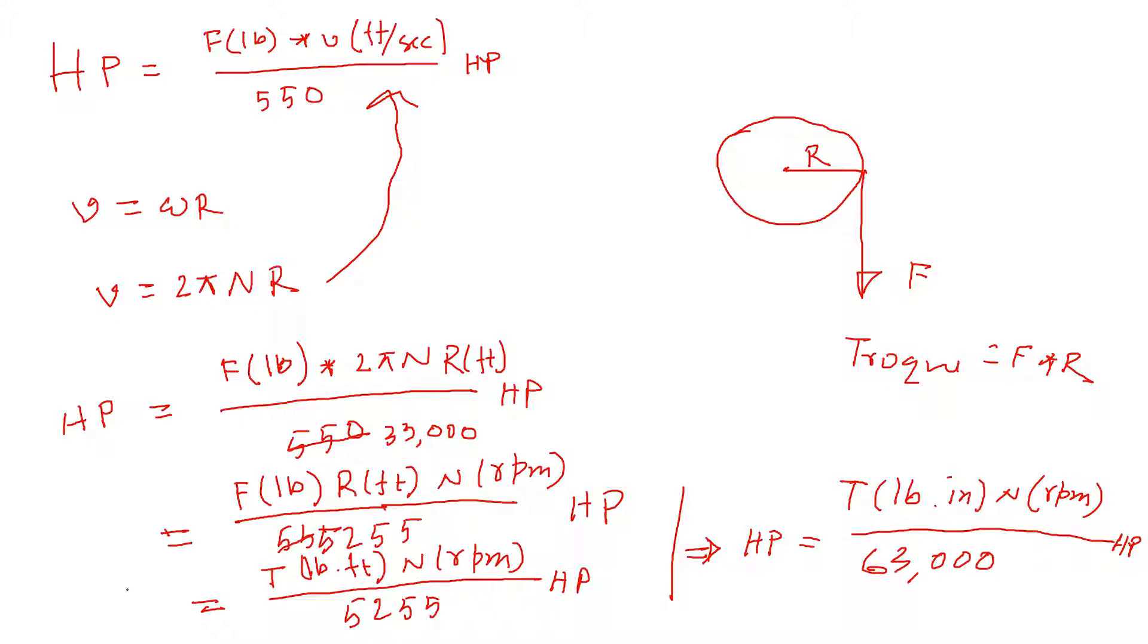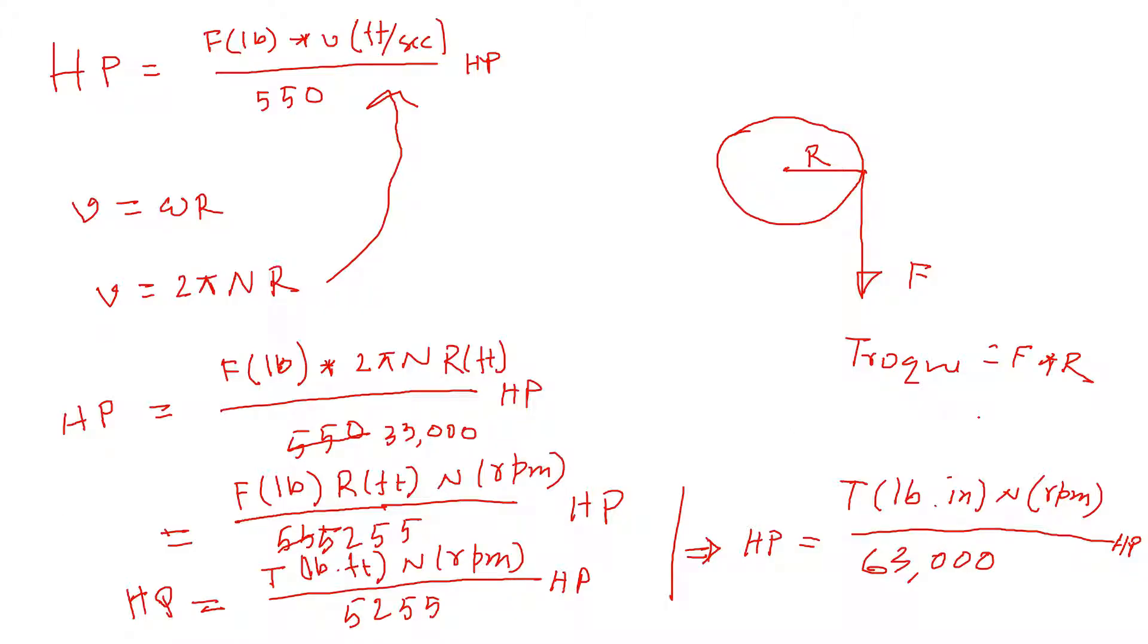So either way, if you are familiar with this, if you measure torque in pound-feet then you can use this expression. If you measure torque in pound-inches then you can use this relationship. That's how you measure horsepower. There is no direct way to measure horsepower. You measure the torque and then the revolution per minute, and then you can convert that into horsepower by these two equations.